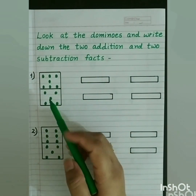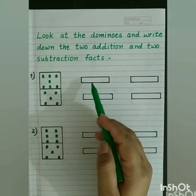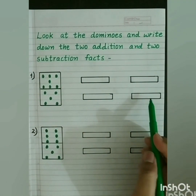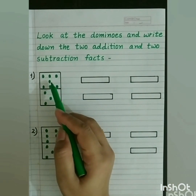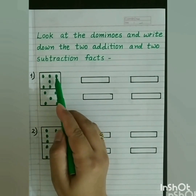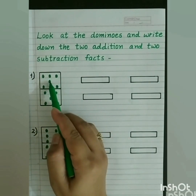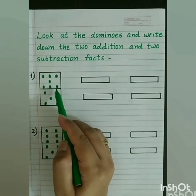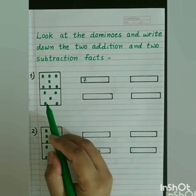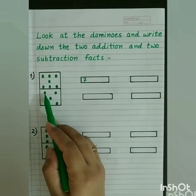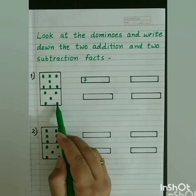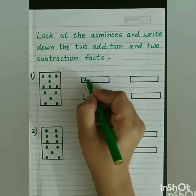In this, we have to look at the domino and write the 2 addition and 2 subtraction facts. First, we will count the dots in the first part: 1, 2, 3, 4, 5, 6, 7. So first we write 7. Now we count the dots in the other part: 1, 2, 3, 4, 5. So we write 5.